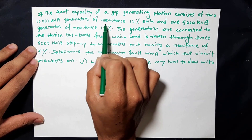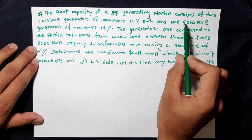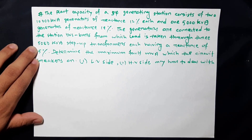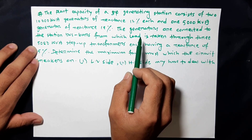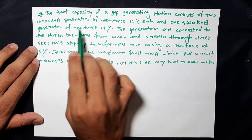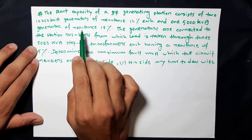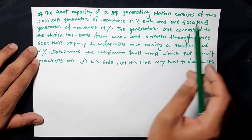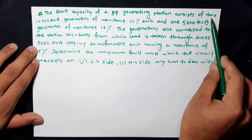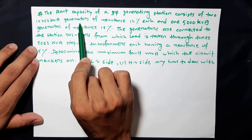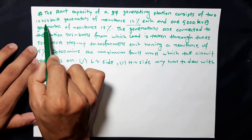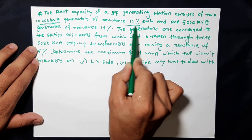The plant capacity of a 3-phase generating station consists of two 1000 kVA generators. The reactors are 12%. The plant capacity is a 3-phase generating station which consists of two kVA generators, and the two generators are connected with 12% reactors.